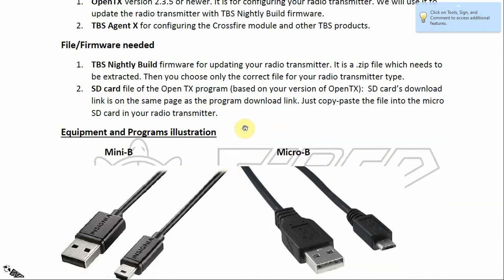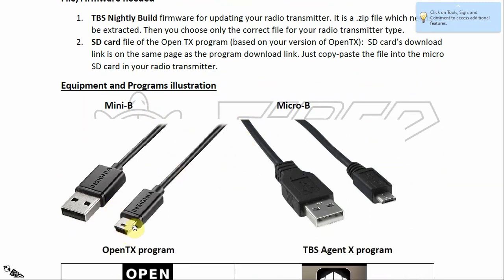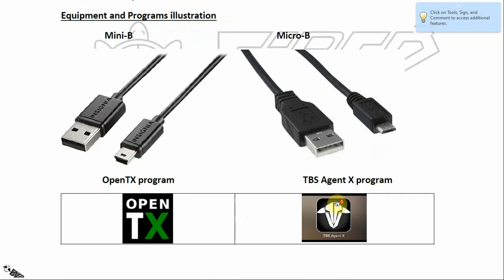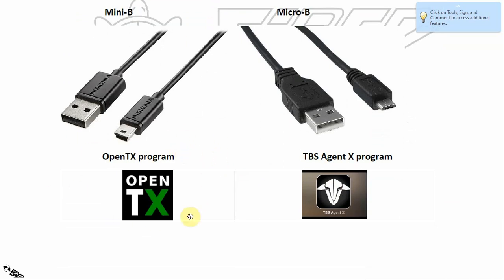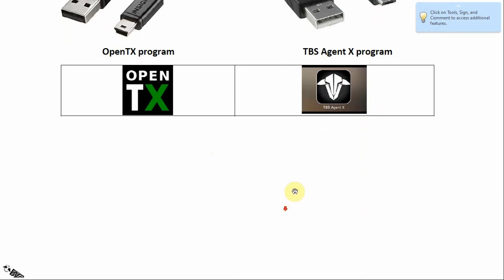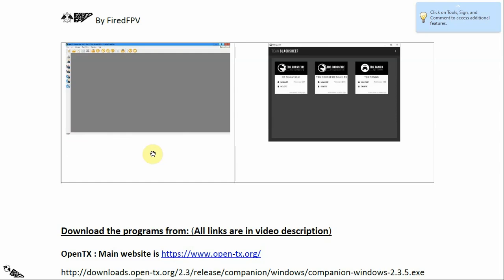You can read the details while I'm speaking. The equipment and programs are shown in illustration. This is how the Mini-B cord and Micro-B connector look. The OpenTX program icon looks like this, and the TBS Agent X program looks like this. The programs themselves also look like this for OpenTX and for TBS Agent X.